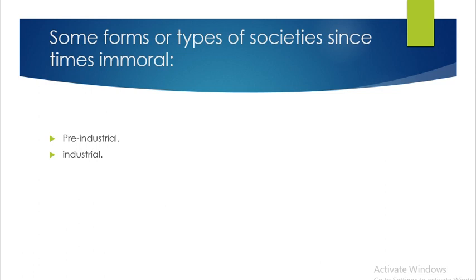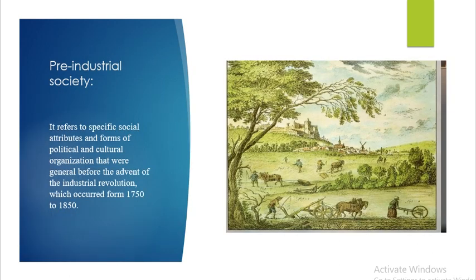There are types of societies. There are two types: pre-industrial and industrial societies. First we will discuss about the pre-industrial society. The pre-industrial society refers to specific social attributes and forms of political and cultural organization that were general before the advent of the industrial revolution, which occurred from 1715 to 1815.